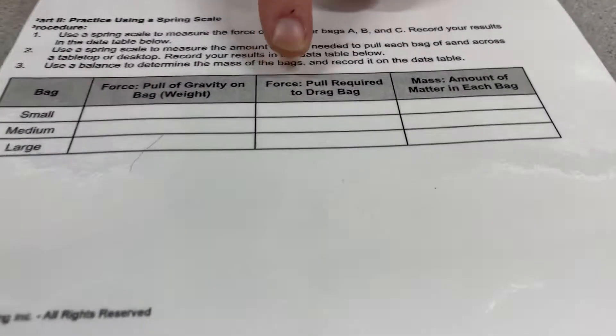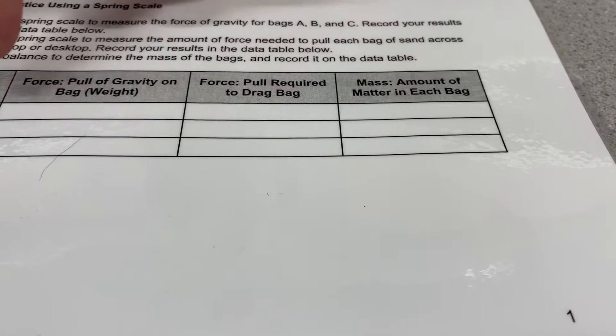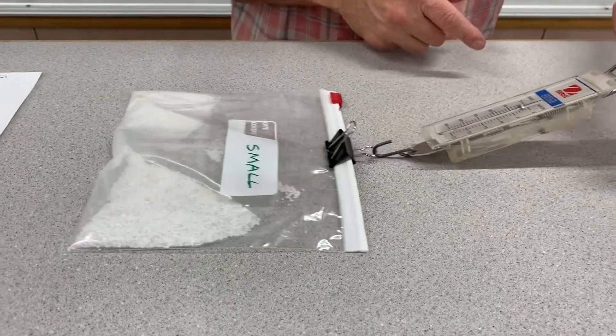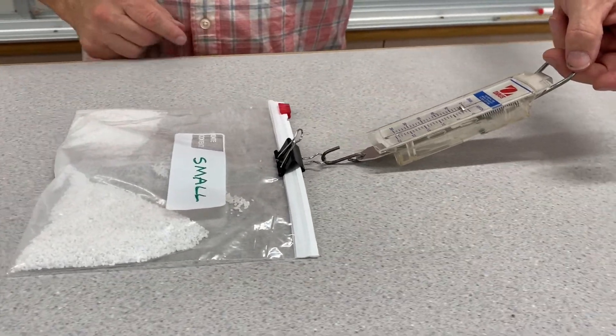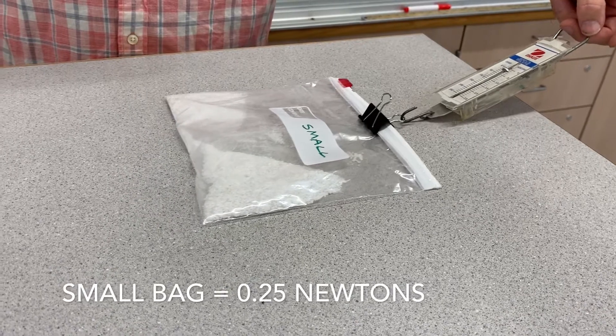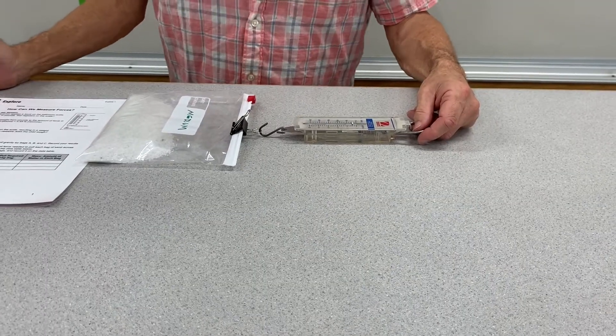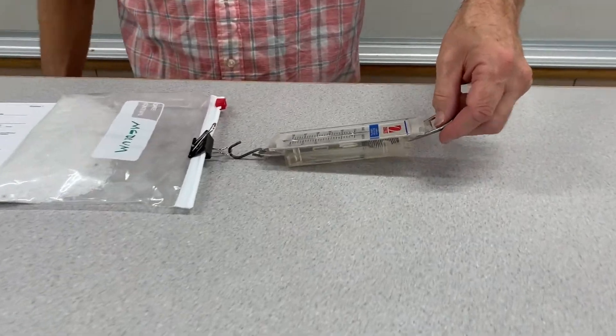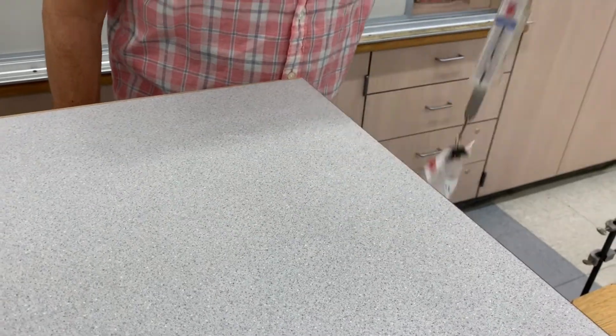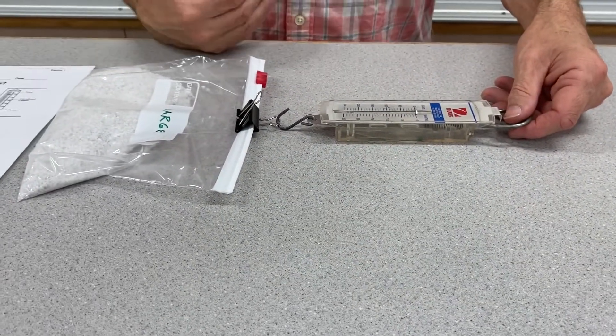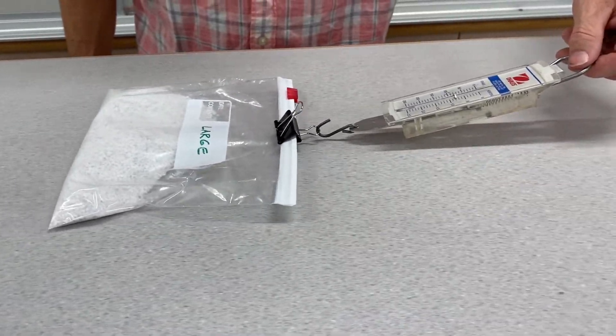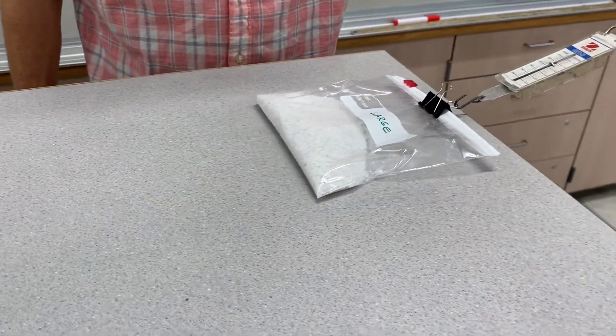We're focusing on one segment of the table: force pull required to drag bag. Starting with the small bag, I'm going to drag it so we can add data. It looks like it's pulling about 0.25 newtons. Write 0.25 newtons down in your table. For the medium bag, I'm going to pull it and see what the drag force is. It's looking like about 0.50, so write 0.50 down. Lastly, the large bag—let's pull this and see what the drag force is. Looking like 0.75 newtons, so write 0.75 down in your table for the large bag.